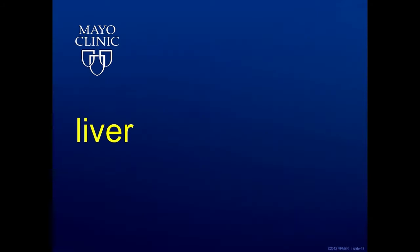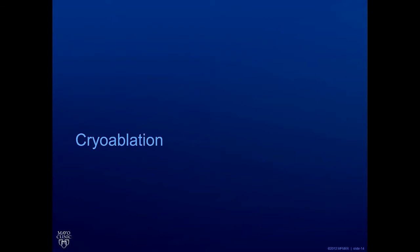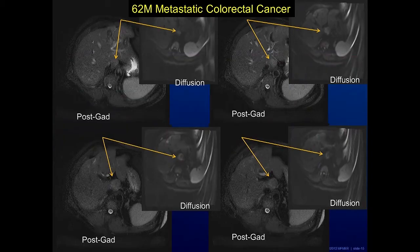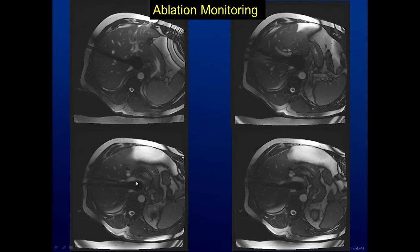Next, in the liver, we have multiple modalities that we can use. Cryoablation is one. Here we have a difficult lesion in the central aspect of the liver. We can target that area and watch the tissue freeze, watching how that encroaches towards the large portal vein in front and the inferior vena cava behind. We can monitor that we've covered the cancer but have not touched the areas that we don't want to hurt.